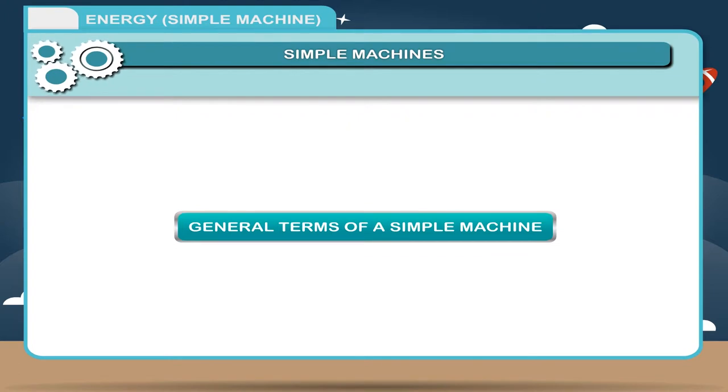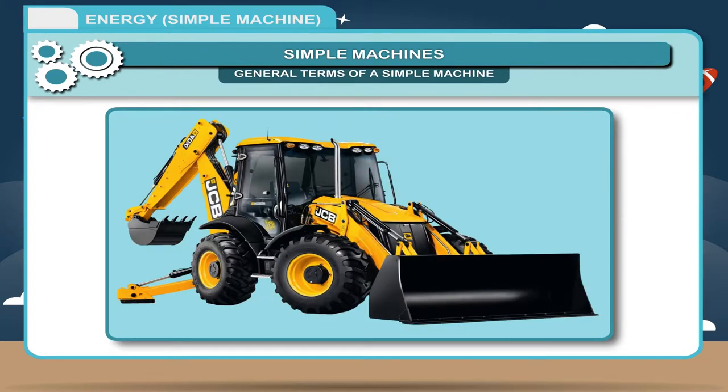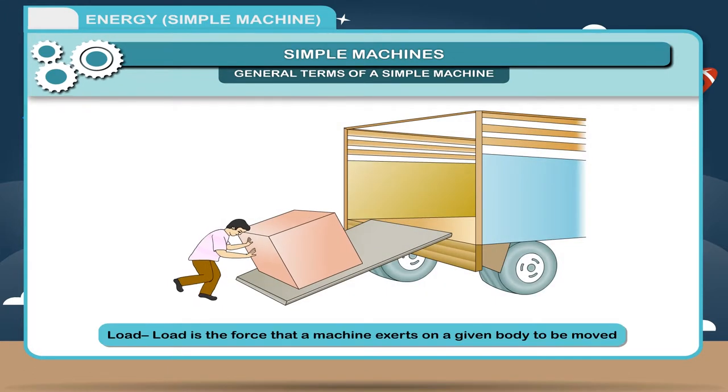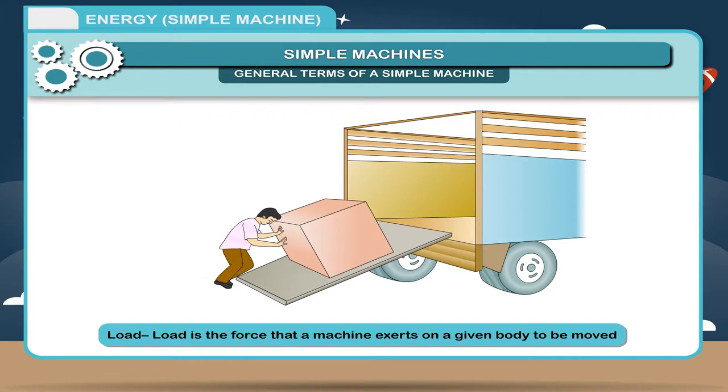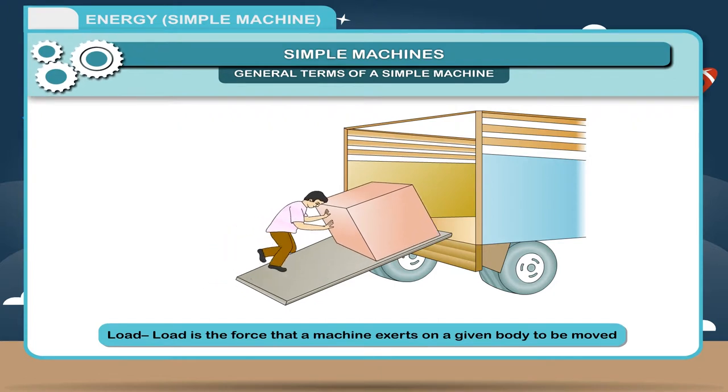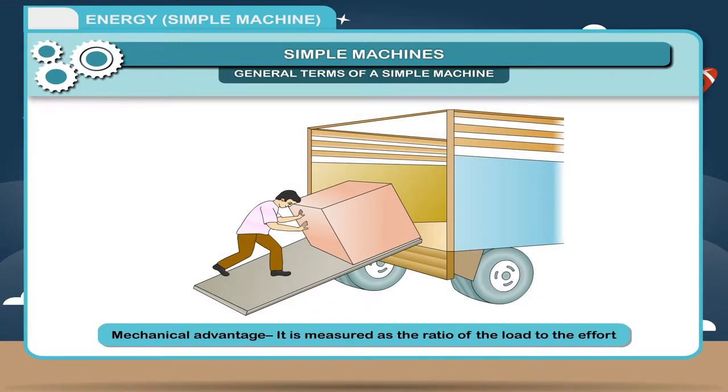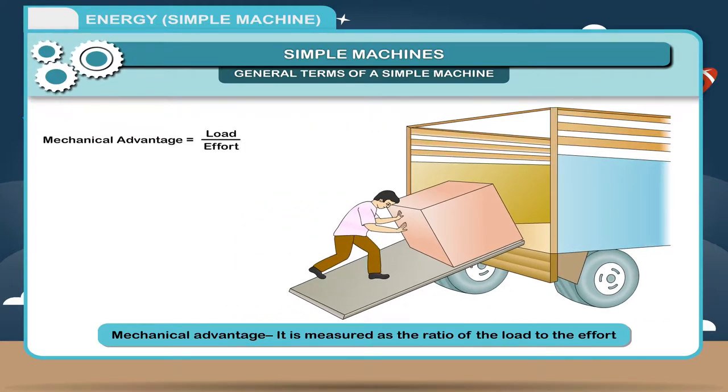General Terms of a Simple Machine: The following terms are frequently used in the study of a simple machine. Effort: It is the force applied to the machine to do mechanical work. Load: Load is the force that a machine exerts on a given body to be moved. Fulcrum: It is a fixed point about which the machine can turn while doing work. Mechanical Advantage: It is measured as the ratio of the load to the effort. Mechanical Advantage is equal to load divided by effort.